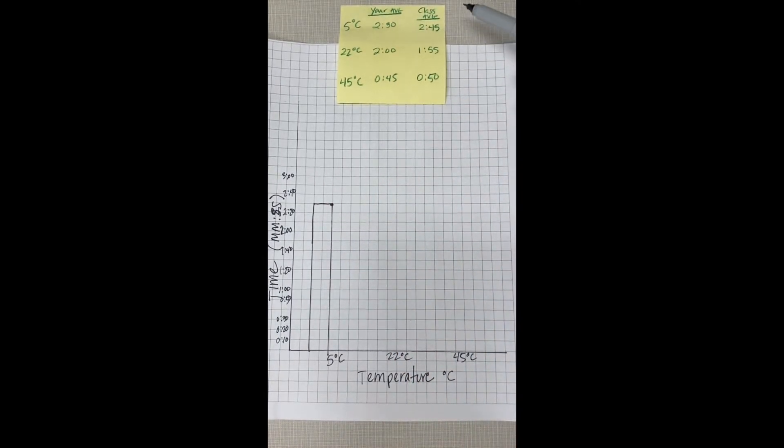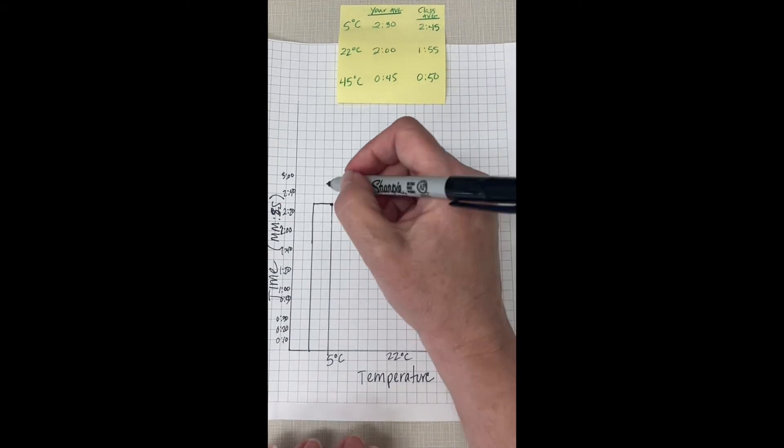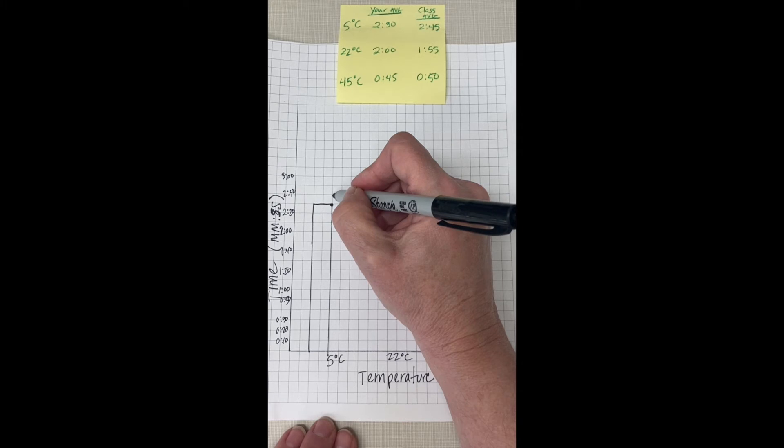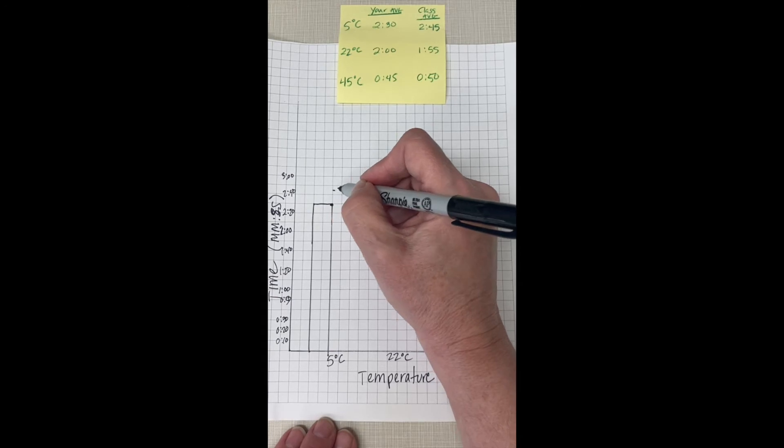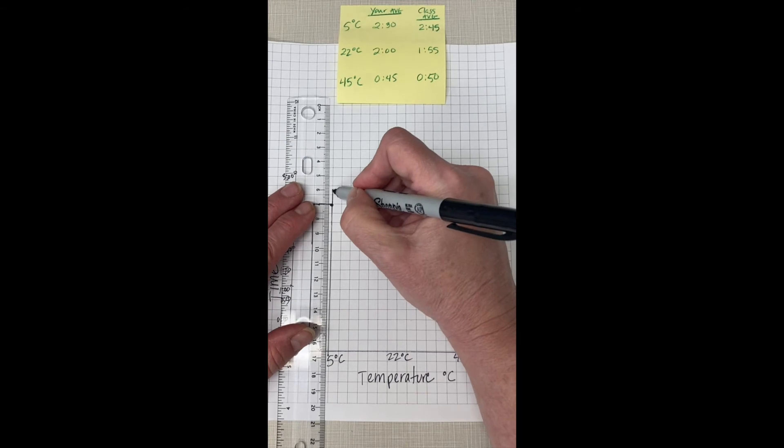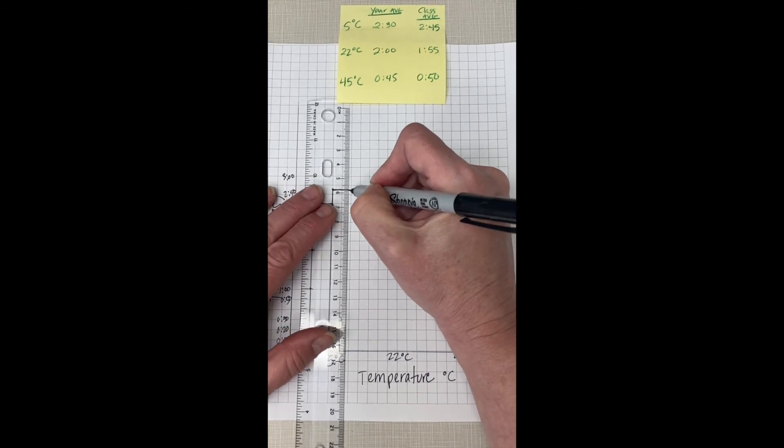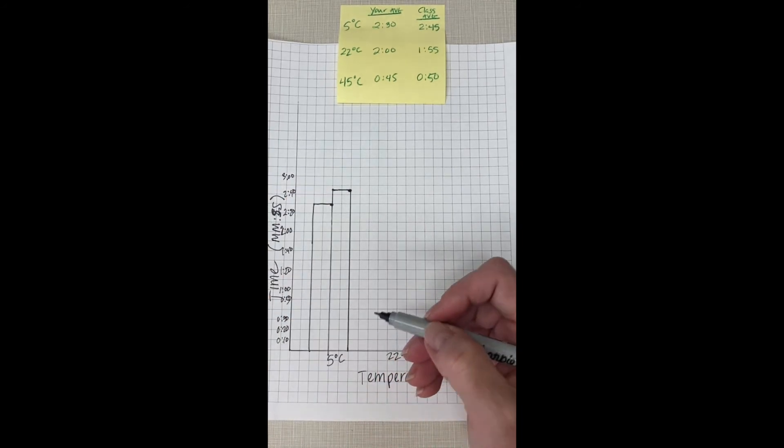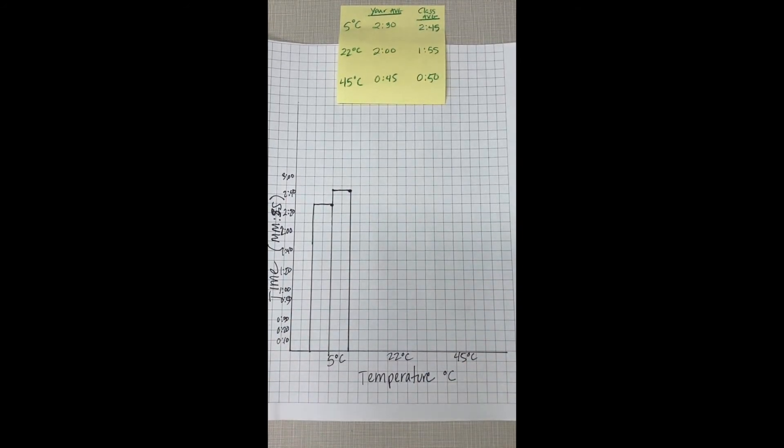And then the class average was two minutes and 45 seconds. So that's 2:30, 2:40, that's 2:50. So it would be right here, right in that area. So if you take that up to there, you go over and I'm just using two spaces for each and I'm not coloring anything in yet or shading anything. We'll get to that in a second.